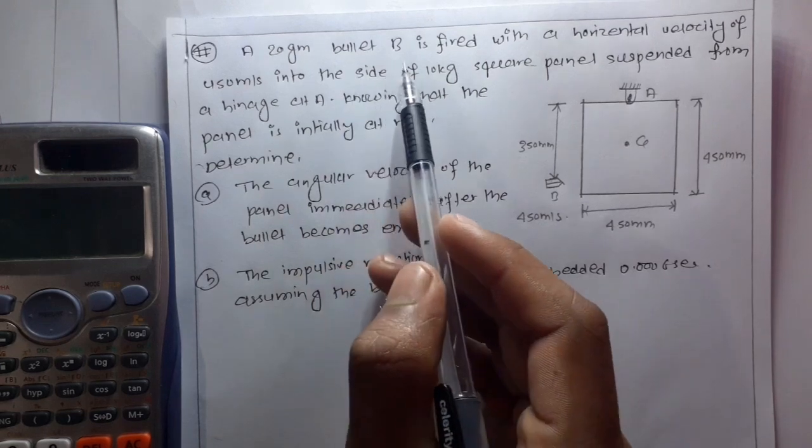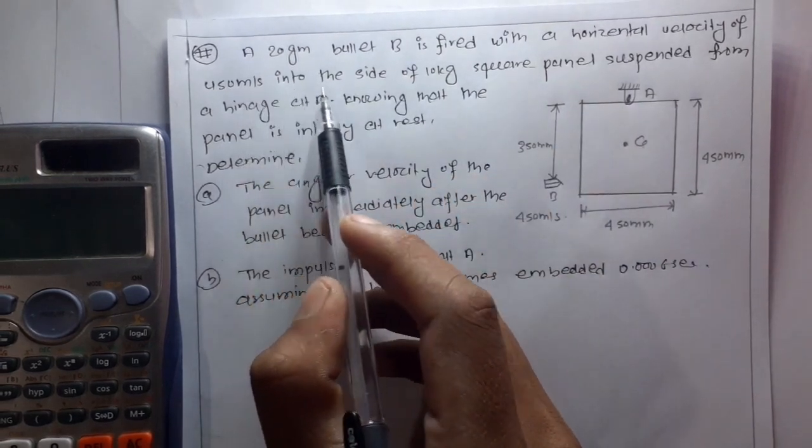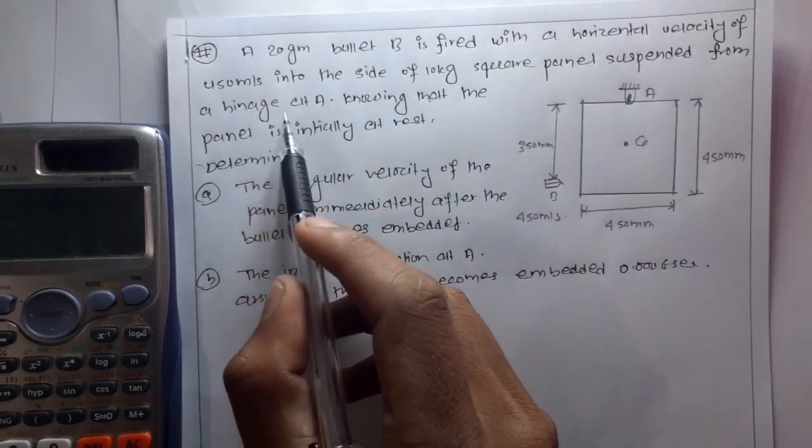The question is: a 20 gram bullet B is fired with a horizontal velocity of 450 meters per second into the side of a 10 kg square panel suspended from a hinge at A.